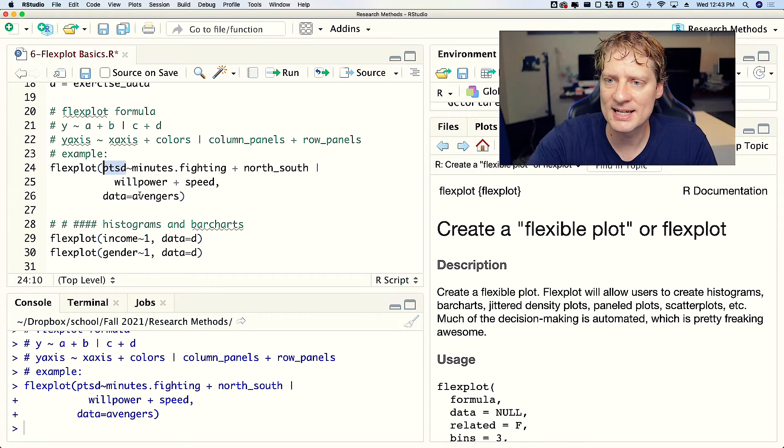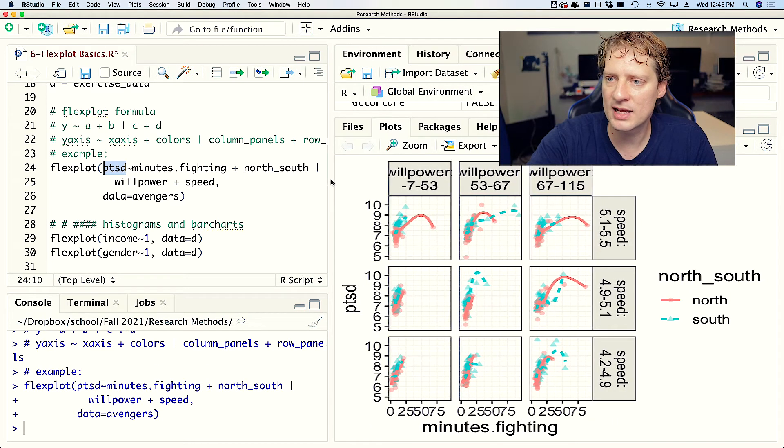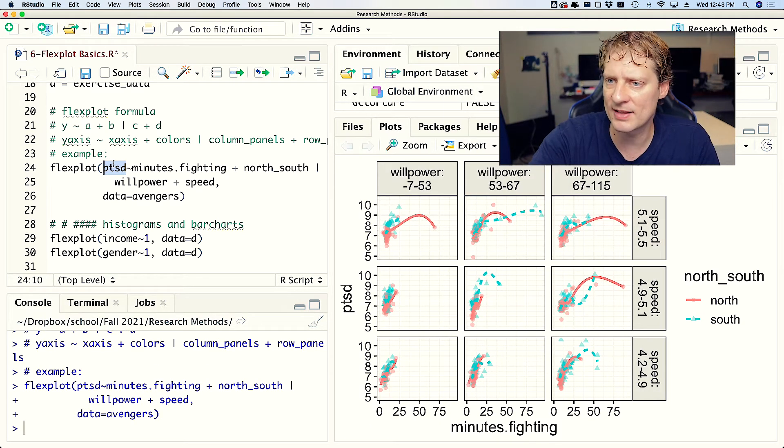Here I'm going PTSD tilde minutes fighting etc., and I'm going to fill up all the variables, I'm going to fill up every slot in a Flexplot formula with a variable. So now we can see that PTSD, not surprisingly, is on the y-axis, minutes fighting is on the x-axis.